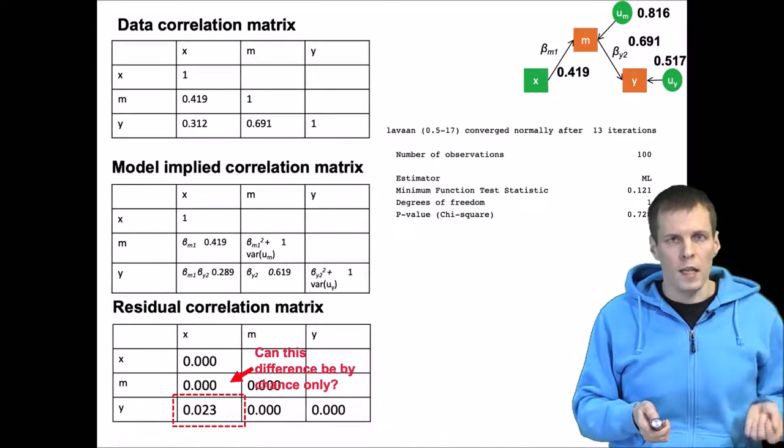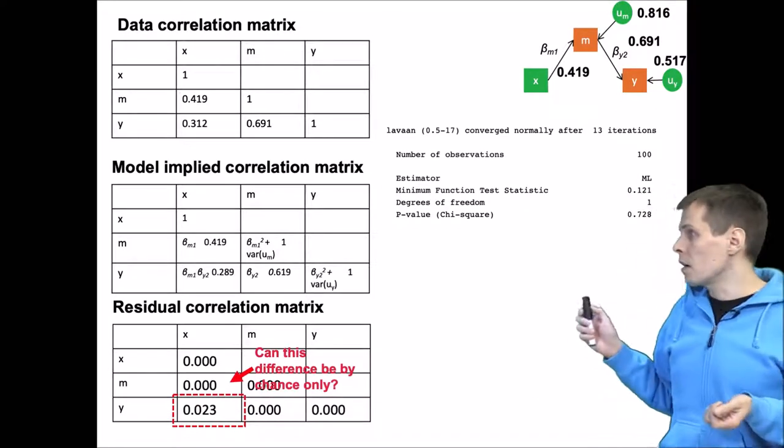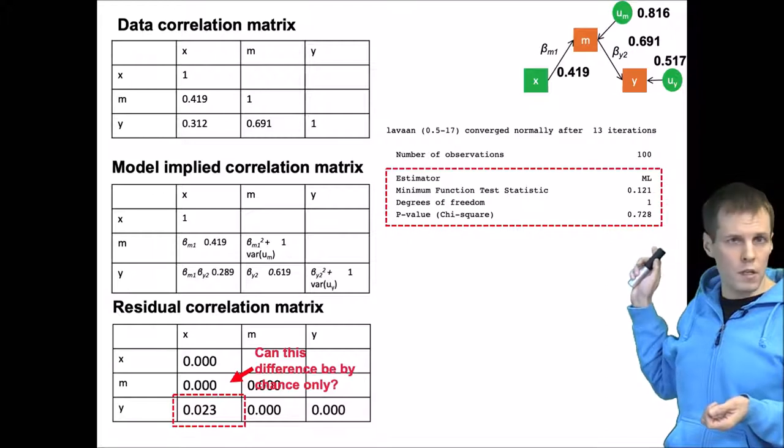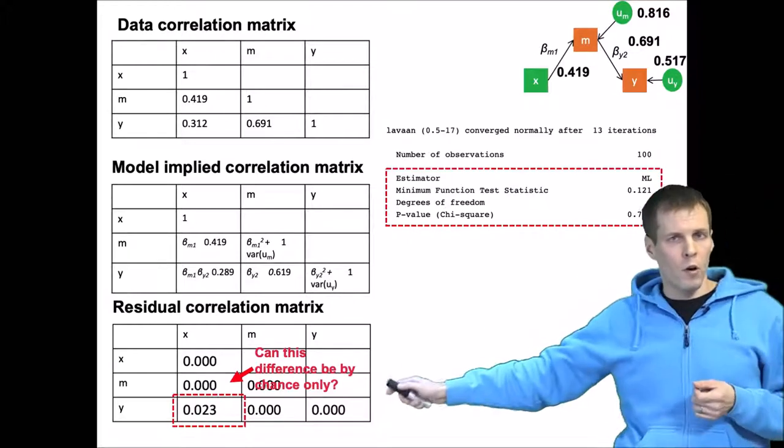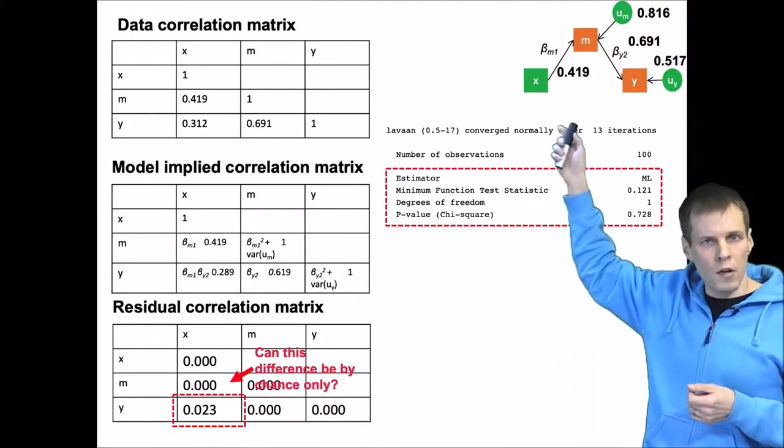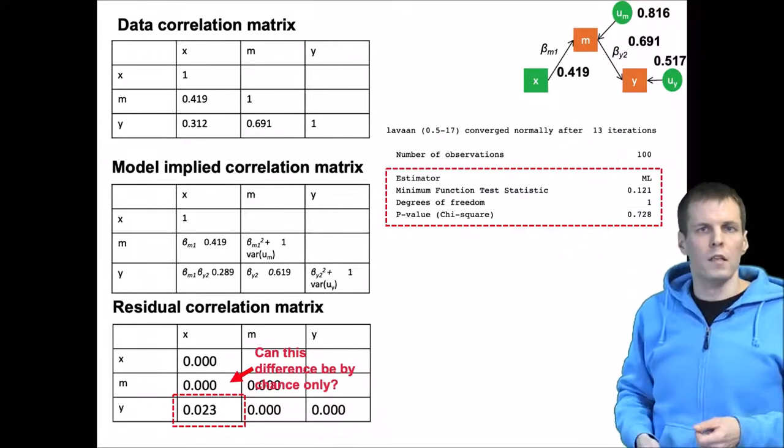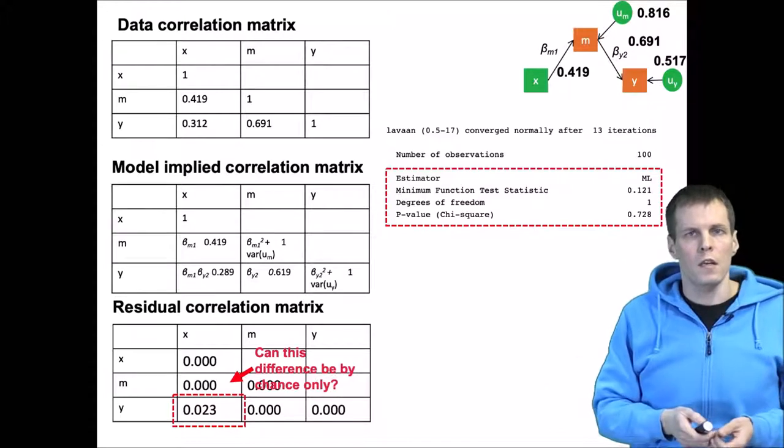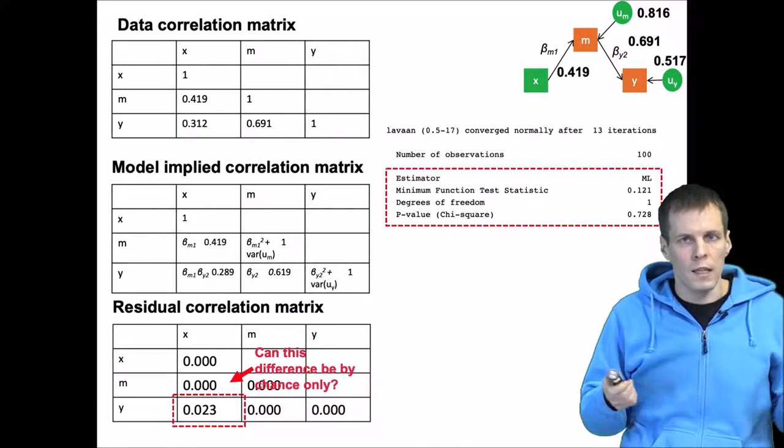The test that we apply is the chi-square test. We have the chi-square test here with one degree of freedom because we're only looking at one value in the covariance matrix. We have one omitted path here, so we have one constraint, and the chi-square test does not reject the model. That is good.